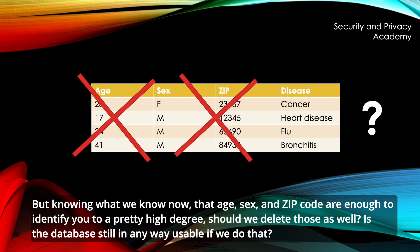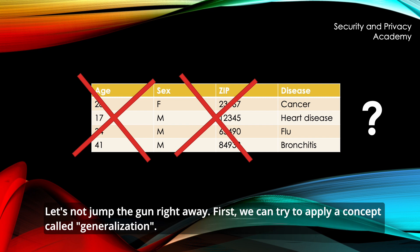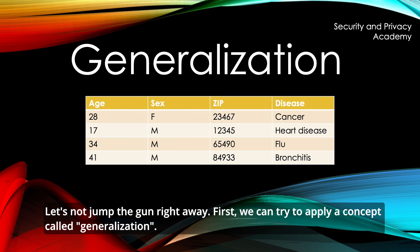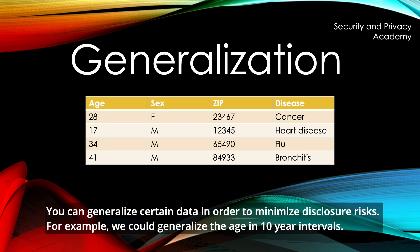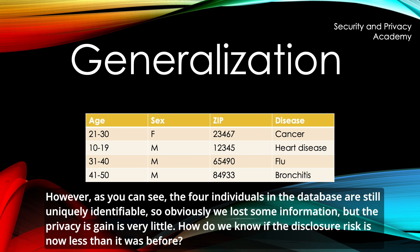Is the database still usable if we do that? Let's not jump the gun right away. First, we can try to apply a concept called generalization. You can generalize certain data in order to minimize disclosure risks. For example, we could generalize the age in 10-year intervals. However, as you can see, the four individuals in the database are still uniquely identifiable. So obviously we lost some information, but the privacy gain is very little. How do we know if the disclosure risk is now less than it was before?